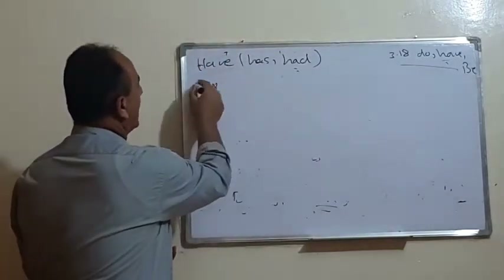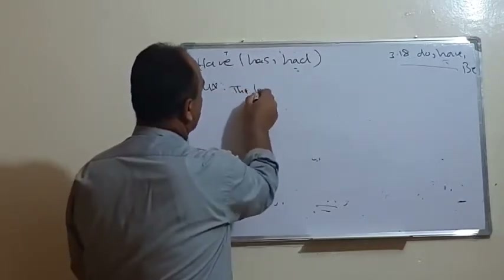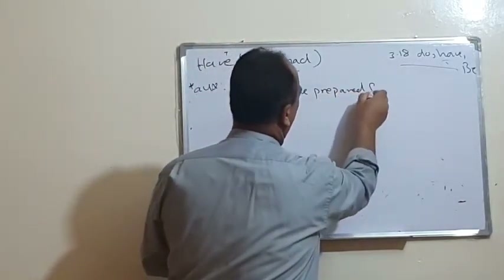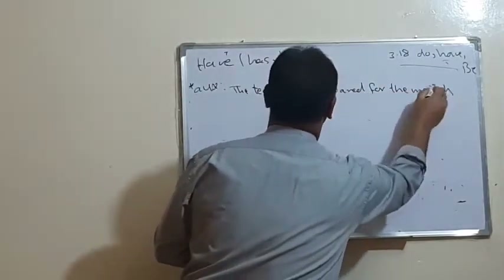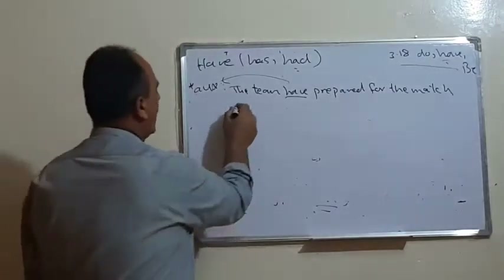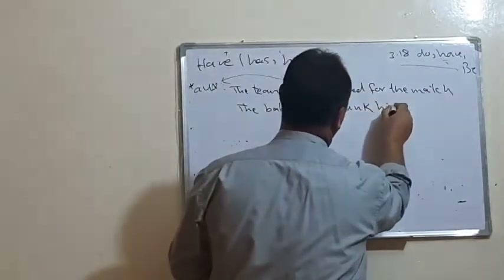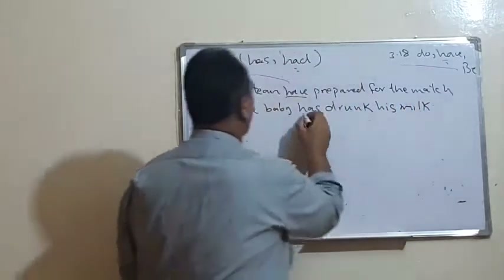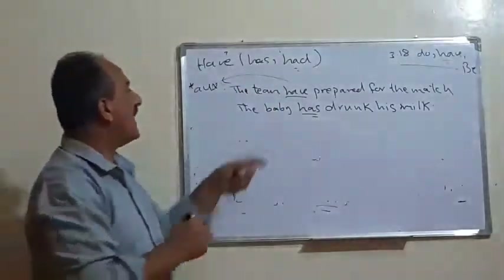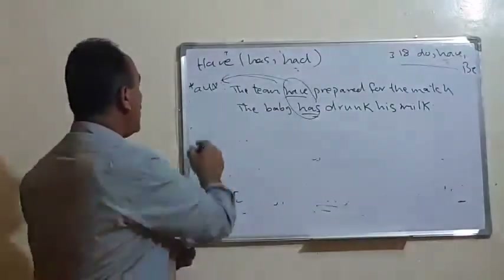'Have' can be used as an auxiliary in the case of perfective tenses. For example, 'the team has prepared for the match' — both 'has' and 'have' are correct here. Or we can say 'the baby has drunk.' When we use 'has,' 'have,' or 'had' in the present perfect or past perfect, we consider them as auxiliaries.